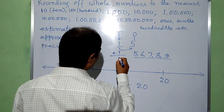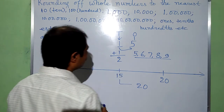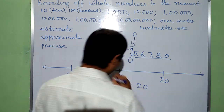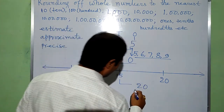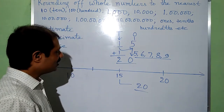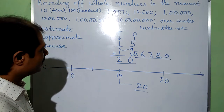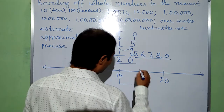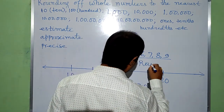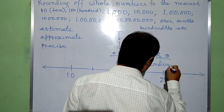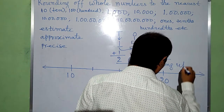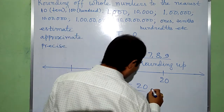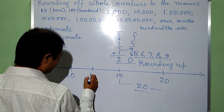In this way, we add 1 to 1, giving 2, and the 1's place is reduced to 0. This gives us 20. This is rounded up. 15 is rounded up to 20.